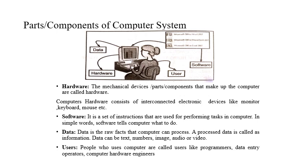Let us now look at the different parts or components of the computer system. A computer system consists of four things: first is hardware, second is software, third is data, and fourth is the user. Hardware includes all the physical parts like the computer screen, keyboard, and mouse. Software is something that tells the computer or hardware to perform which tasks. Softwares are tasks created by users or sometimes inbuilt into the computer system.